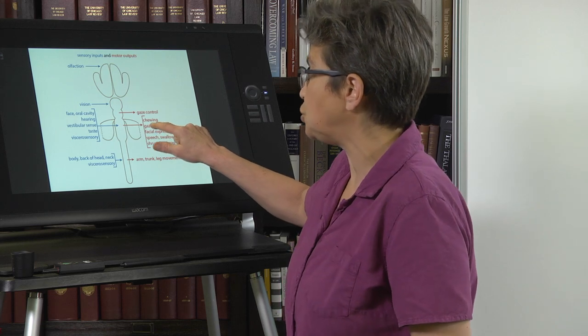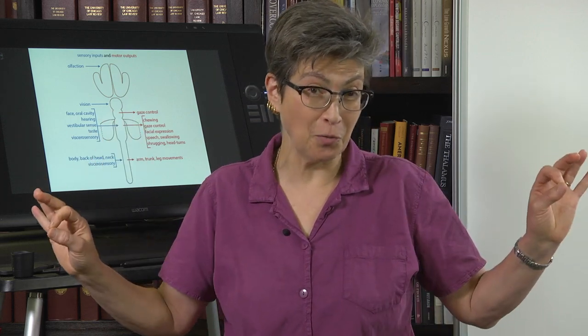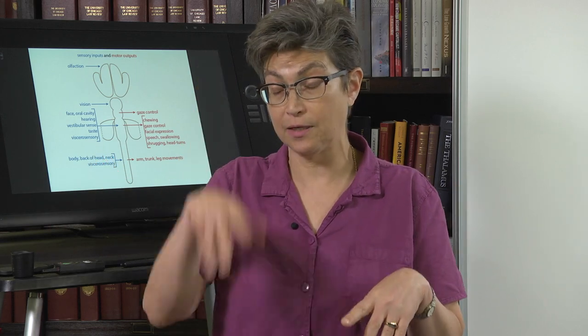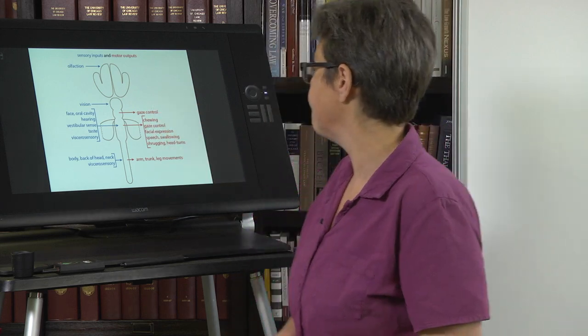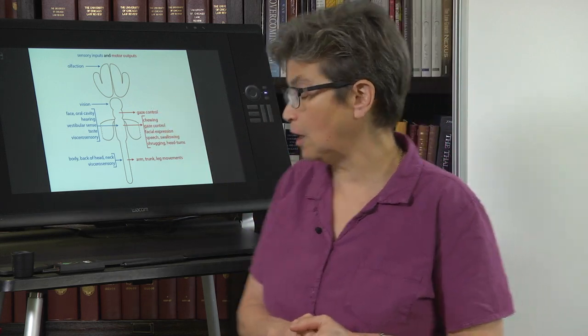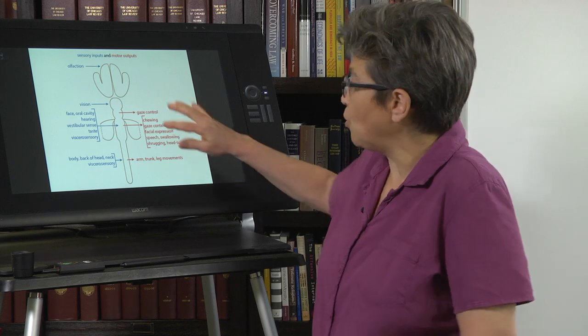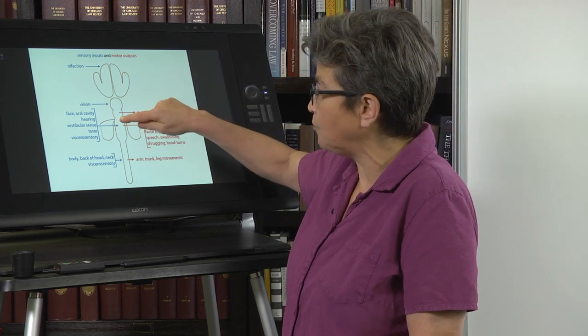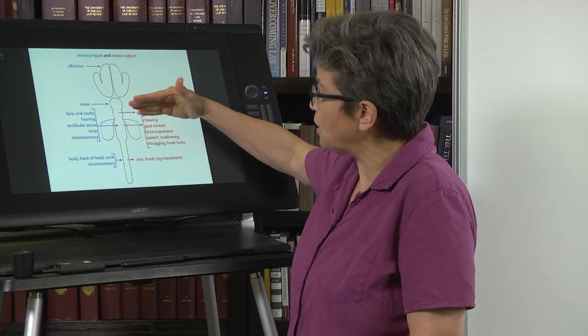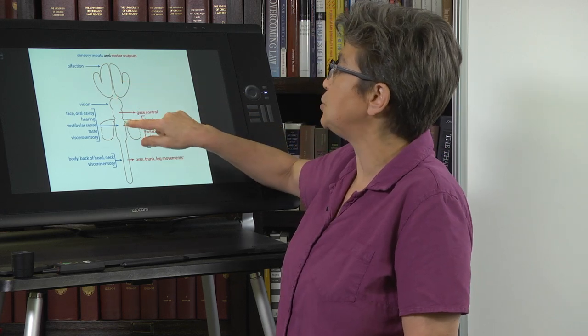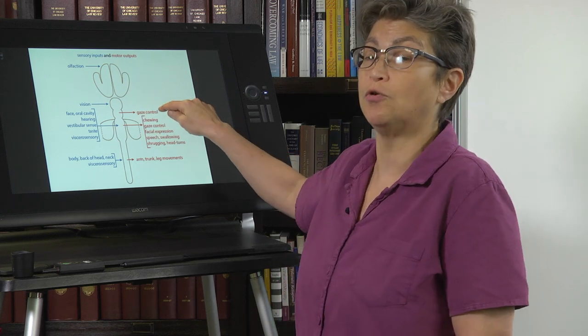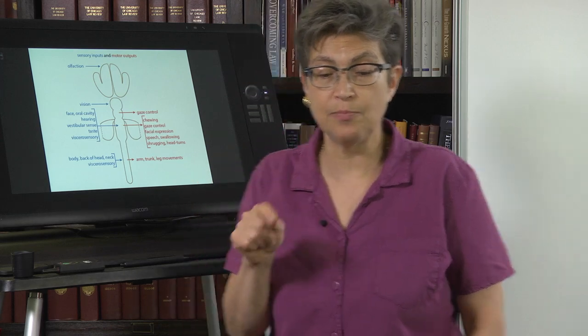Gaze control is a shared function of the hindbrain and the midbrain in a very specific way. The hindbrain is responsible for gaze that goes left and right, and every other direction is supported by the midbrain. Chewing is another activity supported by the hindbrain. When Bobby had his lesion in the rostral hindbrain, it affected all of this, so he couldn't do any of that. The lesion also impaired his midbrain gaze control — midbrain control allows you to move your eyes up and down.